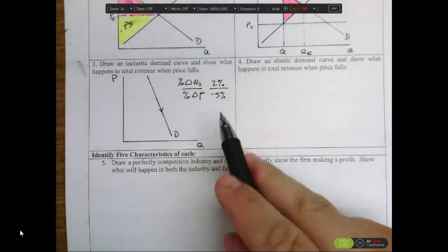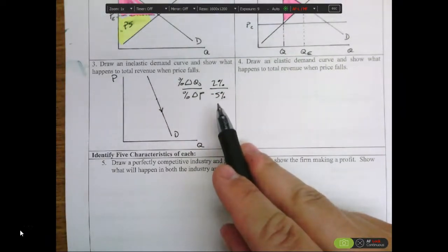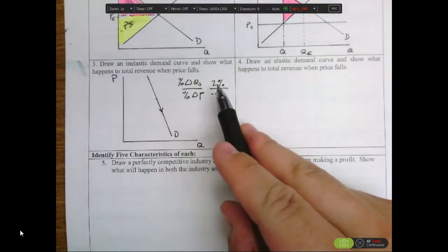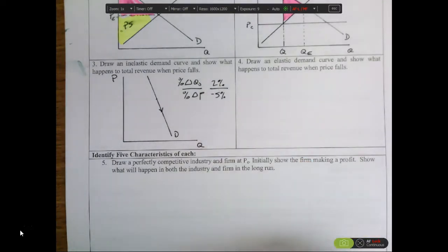So what we're saying is we're losing five percent in sales due to the price drop, but gaining two percent back because of an increase in quantity demanded. That still means our total revenue is less than before. So when you're on the inelastic portion of the demand curve, a drop in price will lead to a loss in revenue.